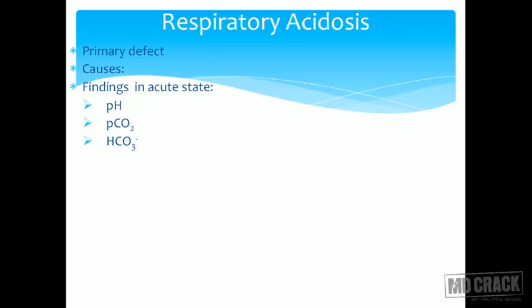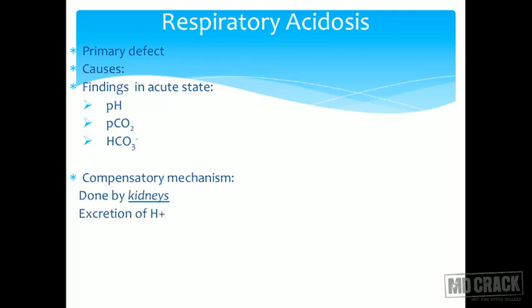In compensation, bicarbonate is also going to increase. What compensates? The respiratory system cannot compensate because that is what is affected. So compensation must be done by the kidneys. In respiratory acidosis, compensation is always done by the kidneys. When there is acidosis, the kidneys excrete protons — either as sodium dihydrogen phosphate or ammonium chloride — to regenerate alkali and contribute to the alkali reserve to combat the carbonic acid.